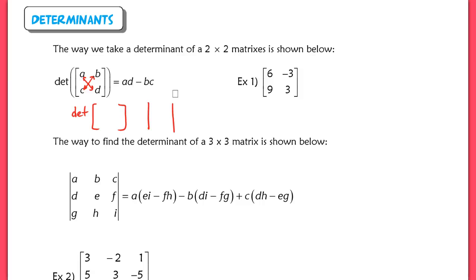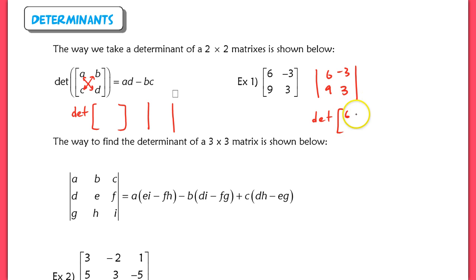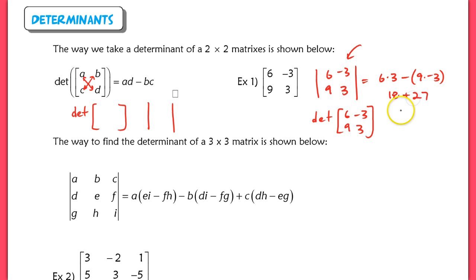In this first example, all I need to do to find the determinant — you'll see it written with vertical bars, which means determinant — we end up taking 6 times 3 and subtracting the product of 9 and negative 3. So we have 18 plus 27, which gives us 45. Just be careful with the order of operations — that's really all you can mess up on here.